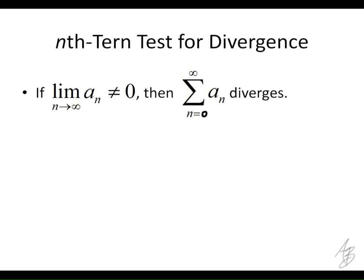What this is saying is if we're adding a bunch of numbers together and those numbers are not approaching 0, then the series is going to diverge. If we have a sum of positive numbers that are not really close to 0, the sum keeps getting bigger and bigger — it's going to be unbounded, growing without bound — so the series diverges.